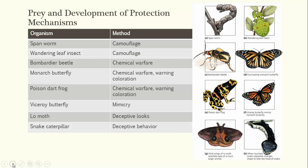Mimicry is another protective mechanism. The viceroy butterfly looks very much like the monarch butterfly, and since predators have learned that monarchs taste foul, the viceroy gains protection through resemblance. Deceptive looks also help — the lo moth's wings look like the eyes of a much larger animal. And the snake caterpillar uses deceptive behavior: when touched, it changes shape to look like the head of a snake. All of these adaptations have evolved to help prey protect themselves.